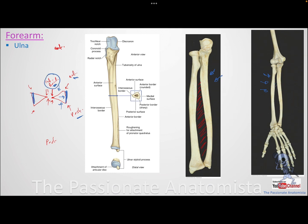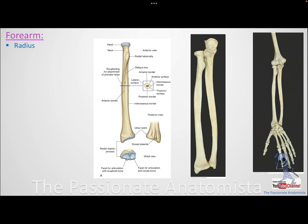For the interosseous border: the interosseous membrane is between the two bones, so the medial bone's interosseous border is actually the lateral border, and the lateral bone's interosseous border is the medial border. To remember this, just extend your elbow, spread your forearm, and you can tell the names of the borders and surfaces: anterior and posterior surfaces and borders, one interosseous border named by its side, and medial or lateral surfaces for the respective bones.